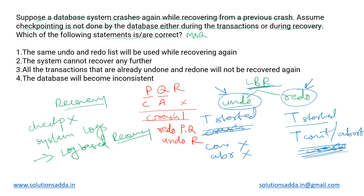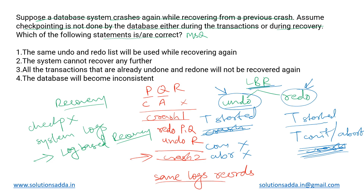While performing this recovery, Crash 2 takes place. At this point, we use the same log records that were used after Crash 1, because no new logs were created — all three transactions were proceeding with their executions. So we use the same log records again, and just as stated in option one, the same undo and redo list will be used while recovering again: we redo P and Q and undo R.